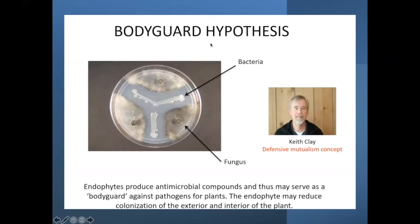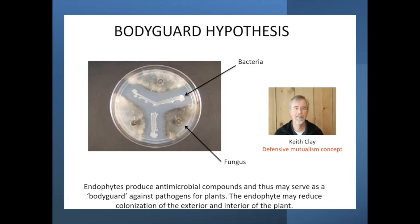We can refer to this whole phenomenon of protection from disease, consumption by herbivores, insects, or other pathogens as defensive mutualism — a term coined by Keith Clay, now at Tulane University. It's a symbiosis between the fungus or bacterium and the plant that is defensive in nature. It has also been referred to as the bodyguard hypothesis: the endophyte in the plant protects its host from anything that might degrade, consume, or damage it.